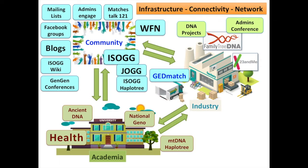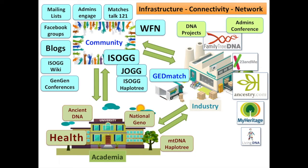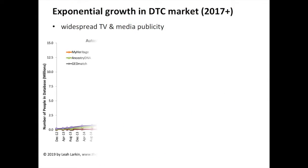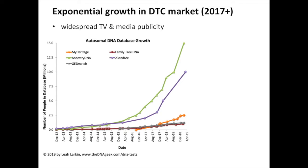GEDmatch became very important when law enforcement started using it to catch serial killers, and this was last year. Then in 2012, Ancestry joined the autosomal DNA market, and later MyHeritage and Living DNA in 2016. Following the competition within the market, we saw exponential growth in direct-to-consumer genetic testing. There are roughly about 30 million people now who have had a DNA test done by one of these companies. Ancestry is ahead with about 15 to 20 million, followed by 23andMe with a customer database of about 10 million people.